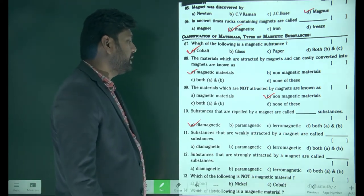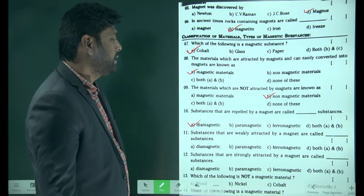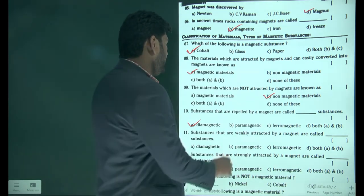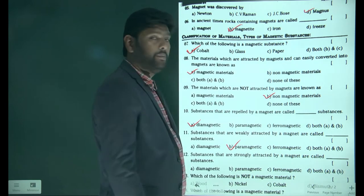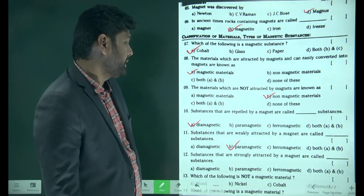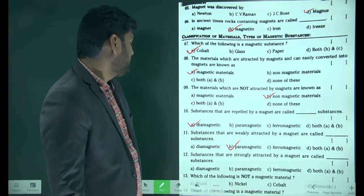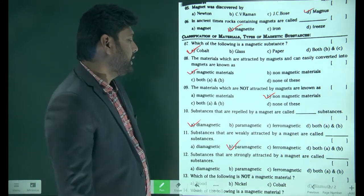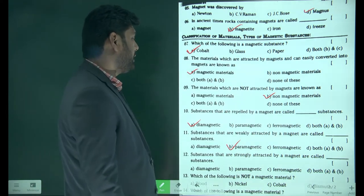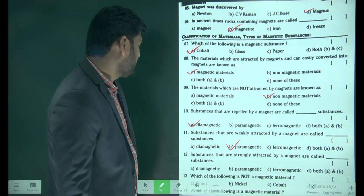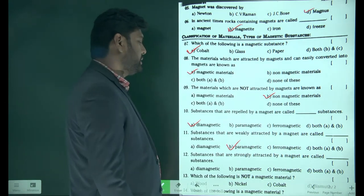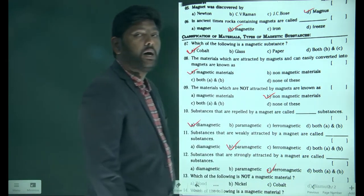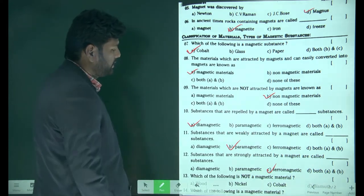Substances that are weakly attracted by a magnet are called paramagnetic materials. Similarly, substances that are strongly attracted by a magnet are known as ferromagnetic substances. Option C is correct.